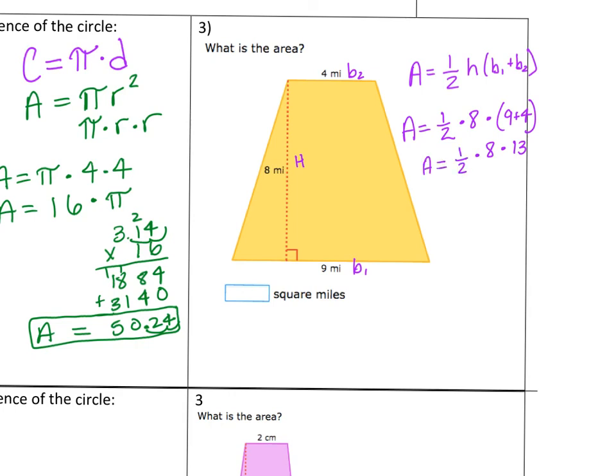Now I can do 0.5 times 8, which is 4, times 13. And some of you can do that in your head, but I cannot. So the area is 52 square miles. And I'm done.